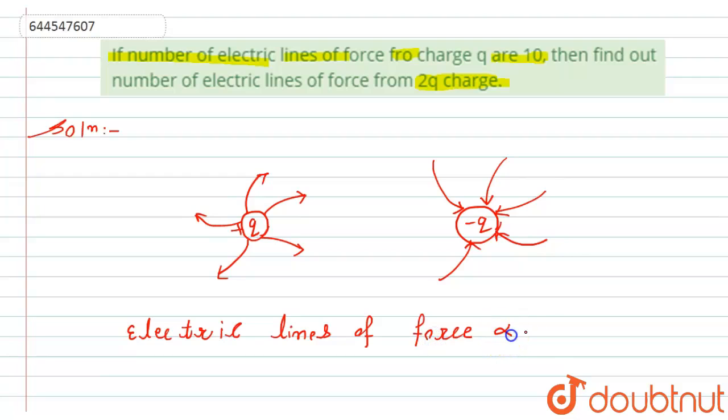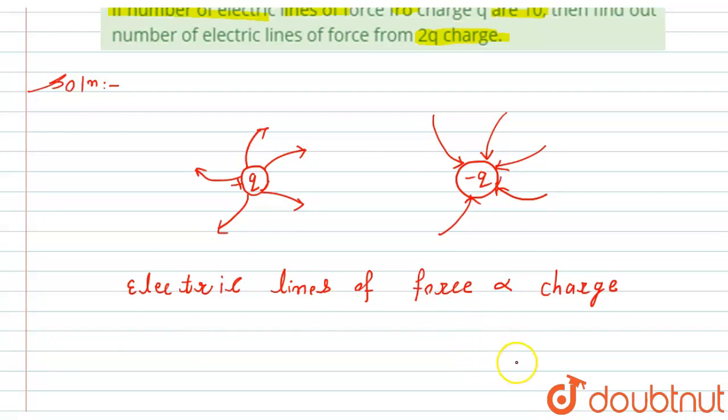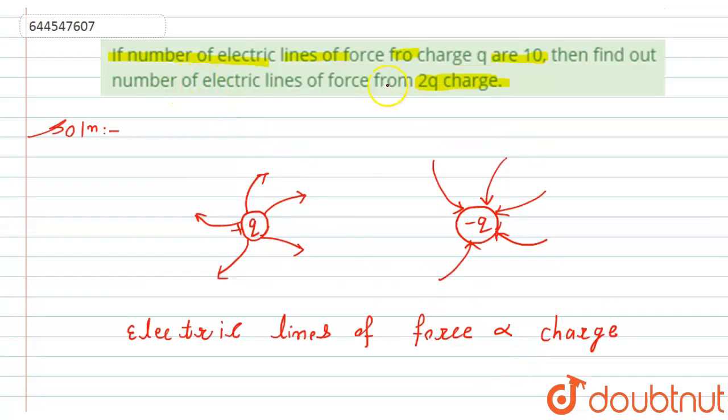Now we know that the electric lines of force is directly proportional to charge. So according to given, it is given that the electric lines of force from charge q is 10.